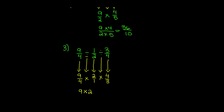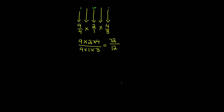Now all we have to do is multiply nine times two times four over four times one times three. Nine times two is eighteen, and eighteen times four is seventy-two. Four times one is four, and four times three is twelve. If you want, you can divide the numerator by the denominator and make it a mixed number.